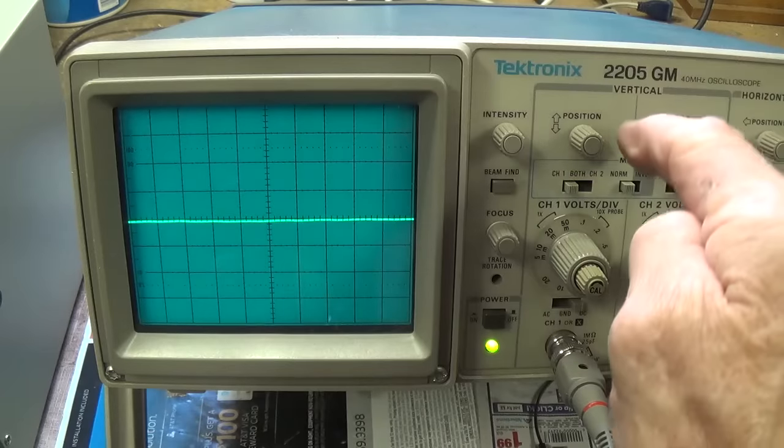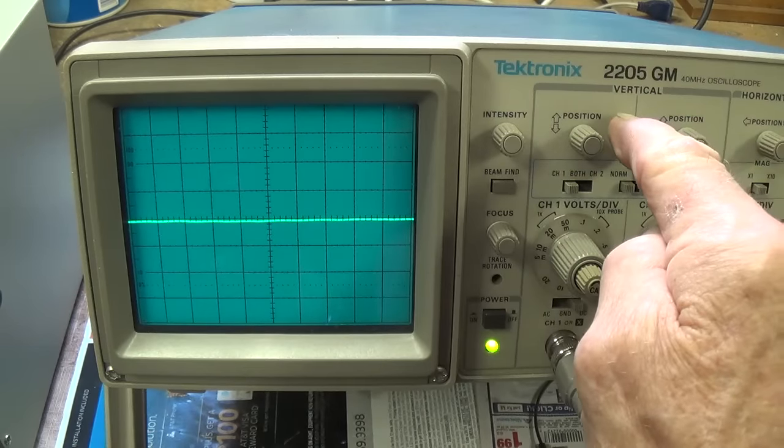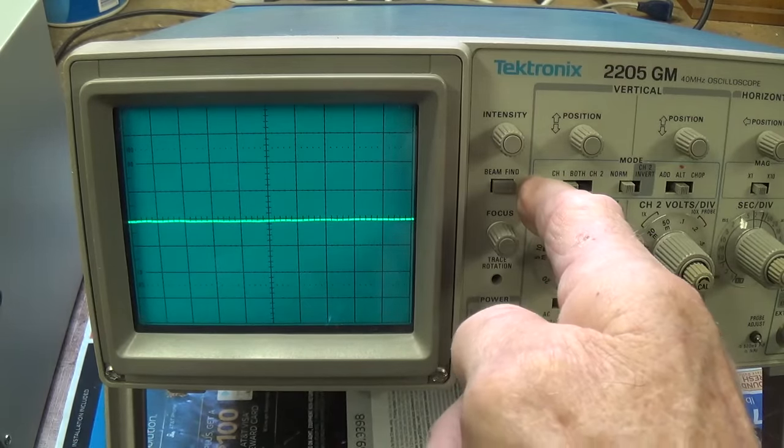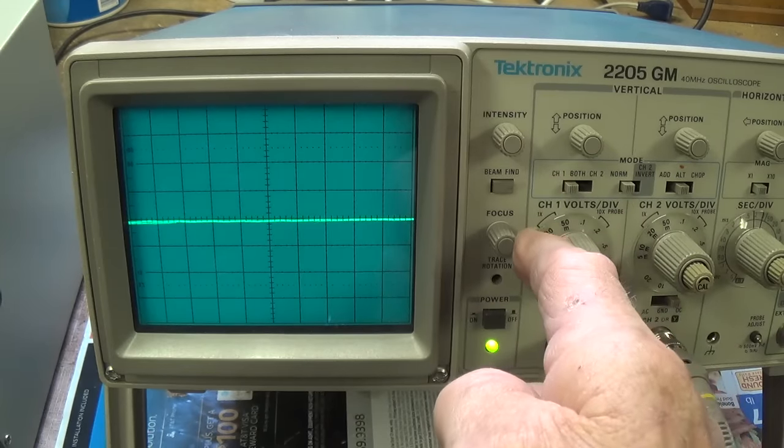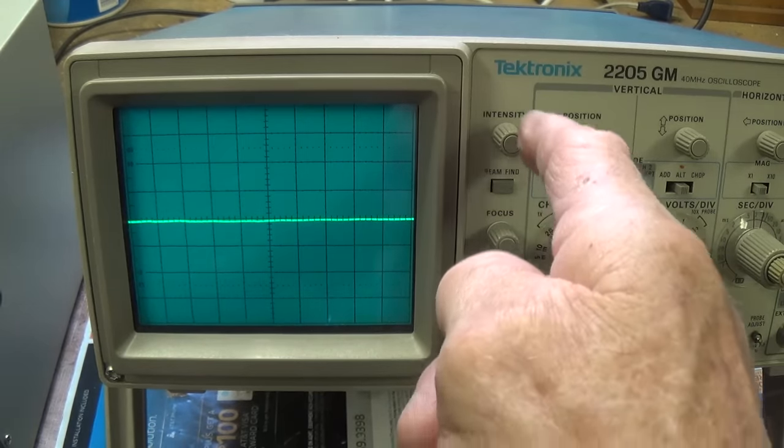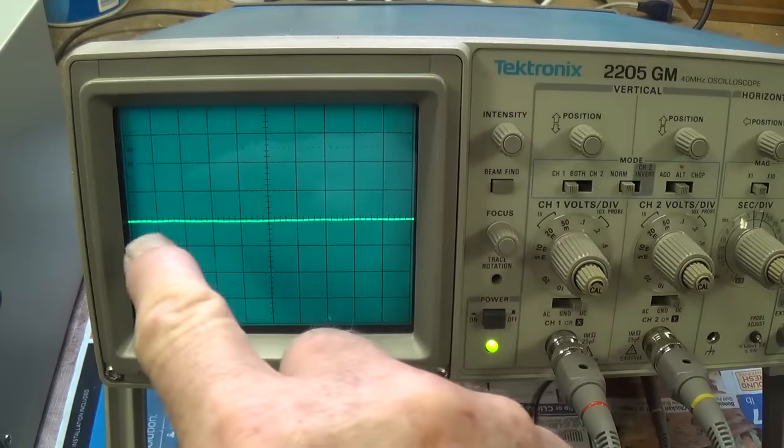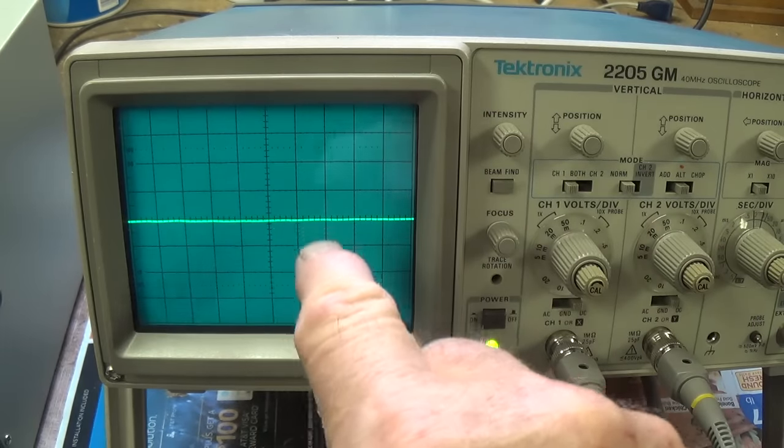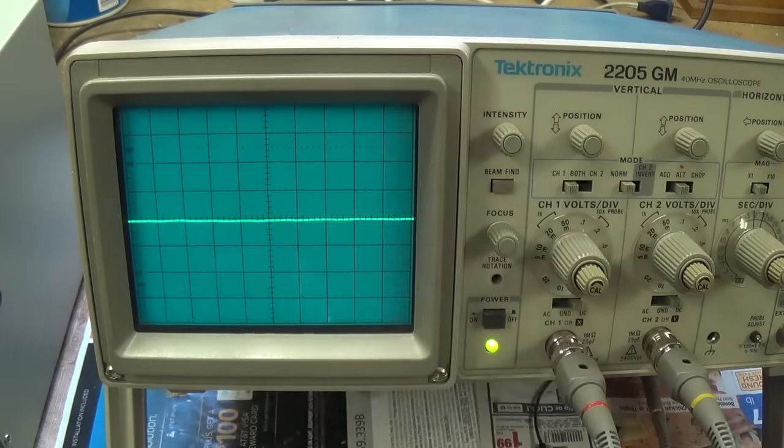Okay, so now we have changed the position of the beam. We found it with beam find if it's not showing. We have focused it into a sharp line, and we have altered the intensity to where it's just fine for us to see, but not excessive or damaging to the phosphors of this scope screen.